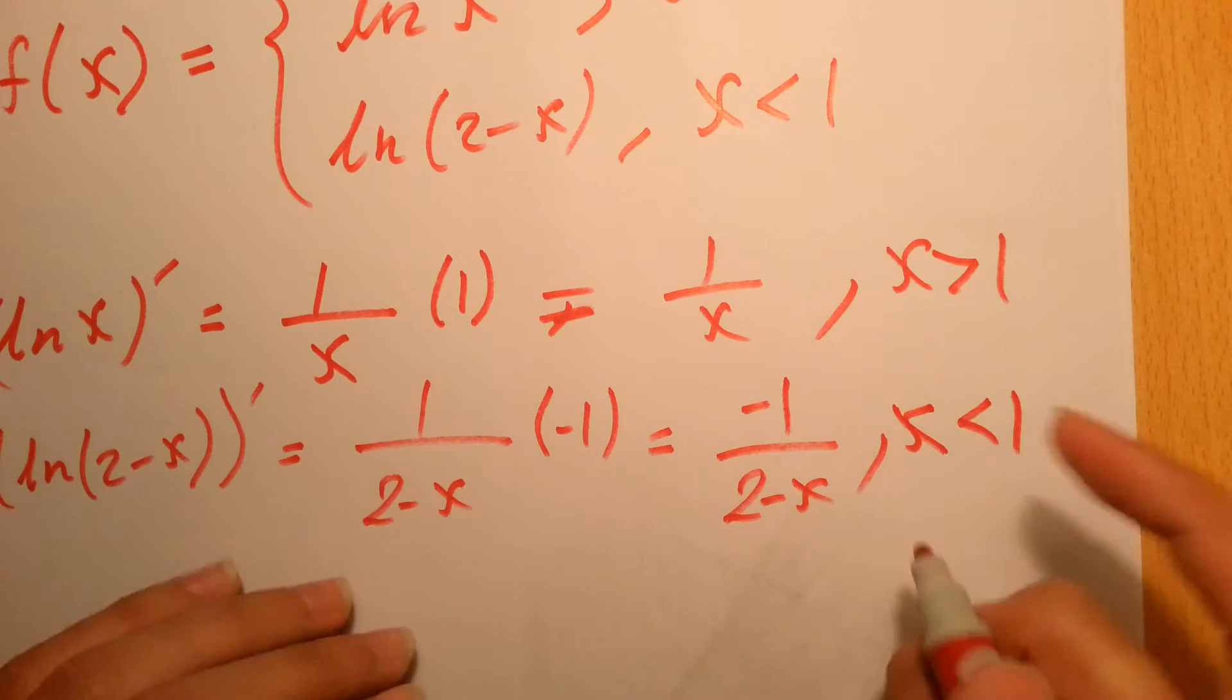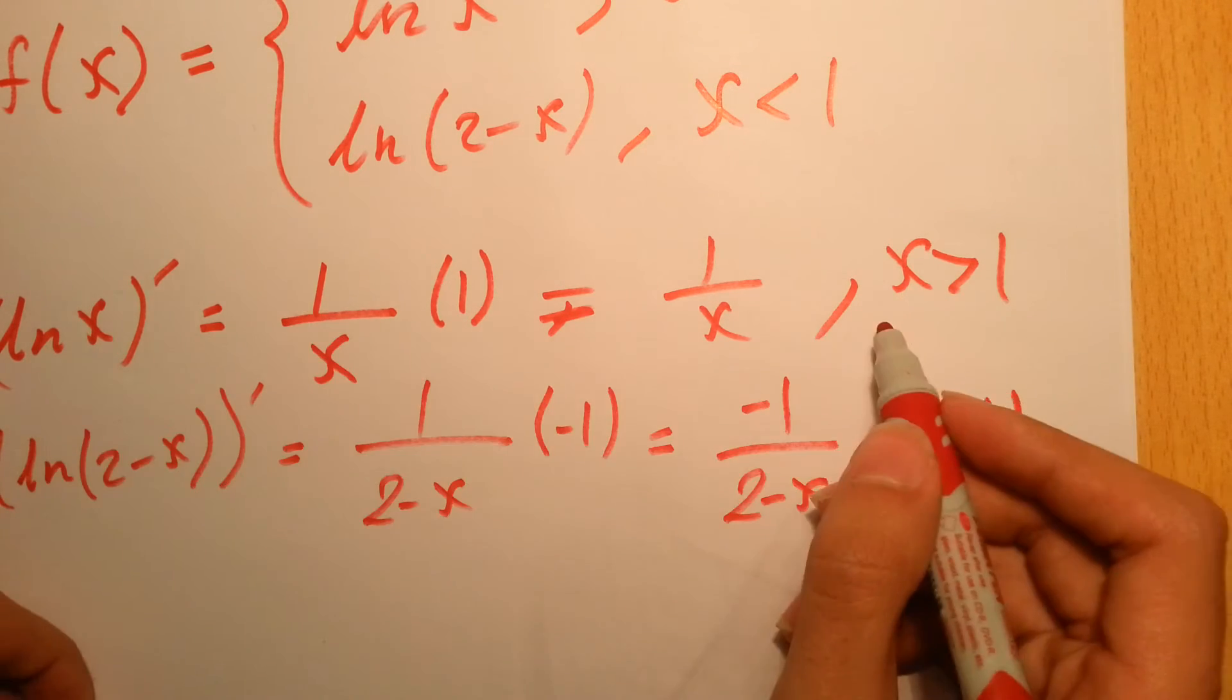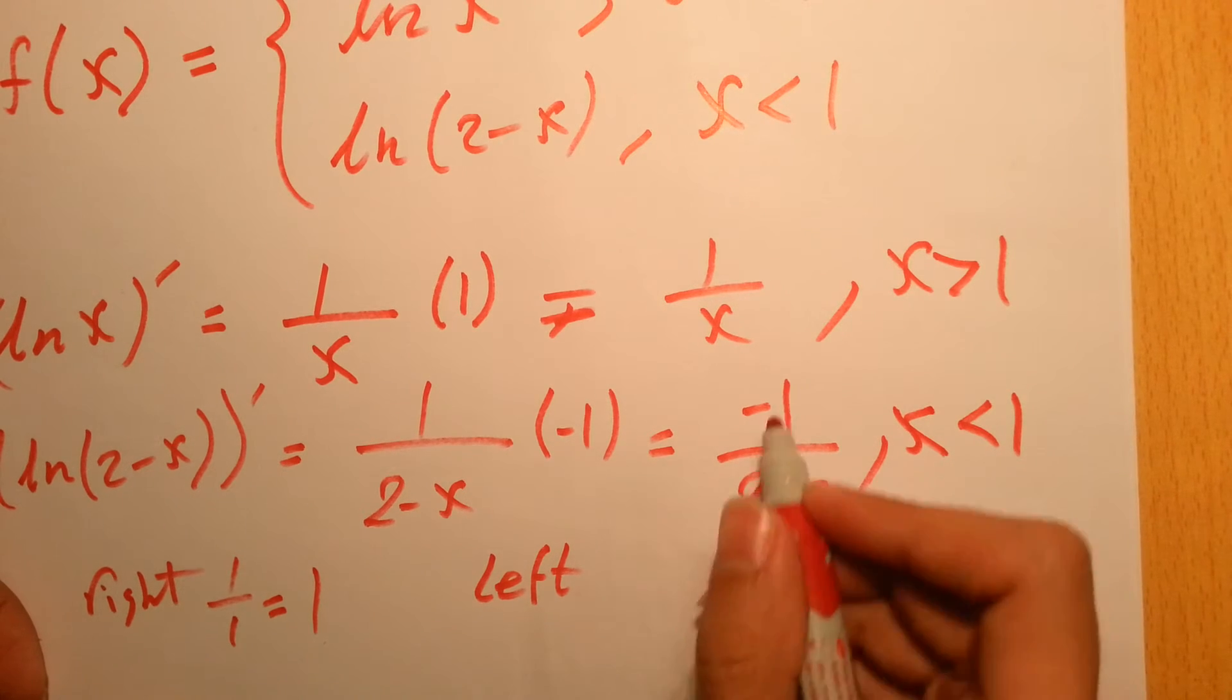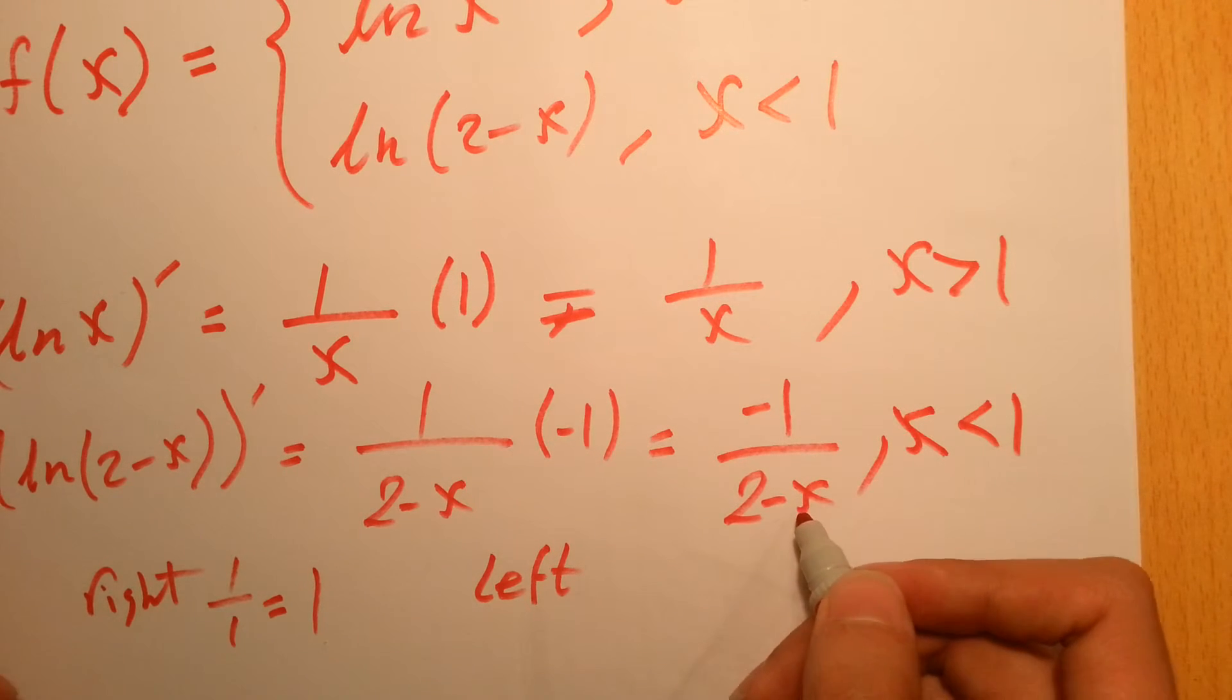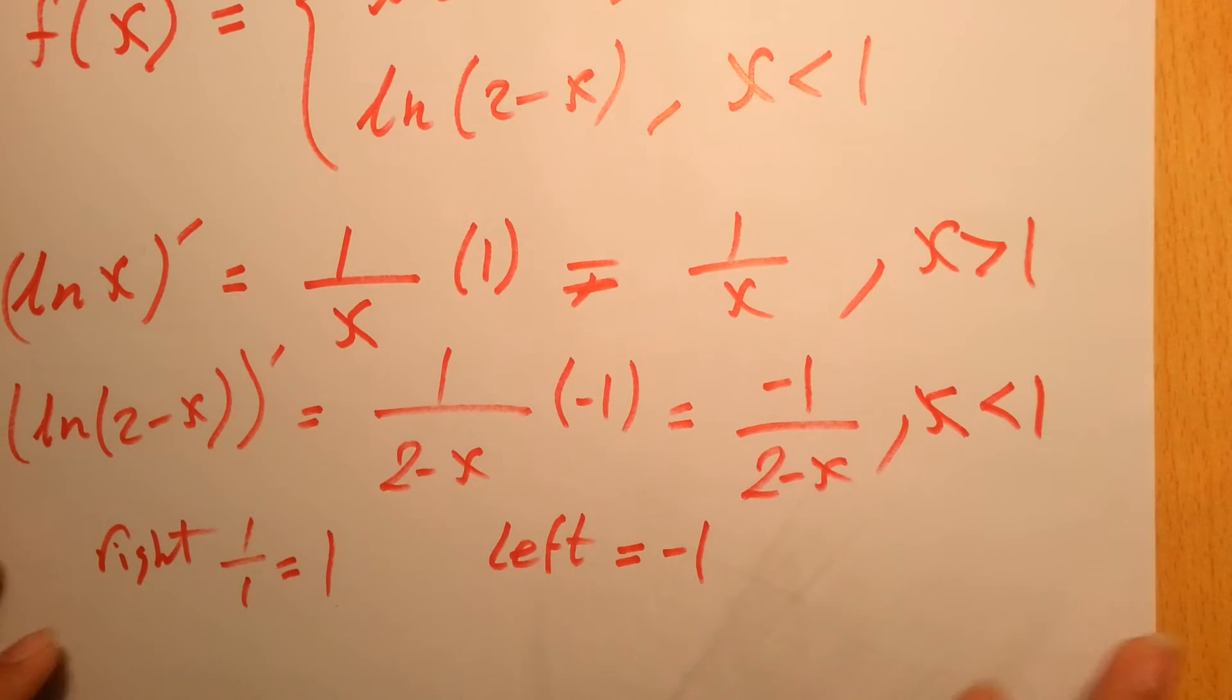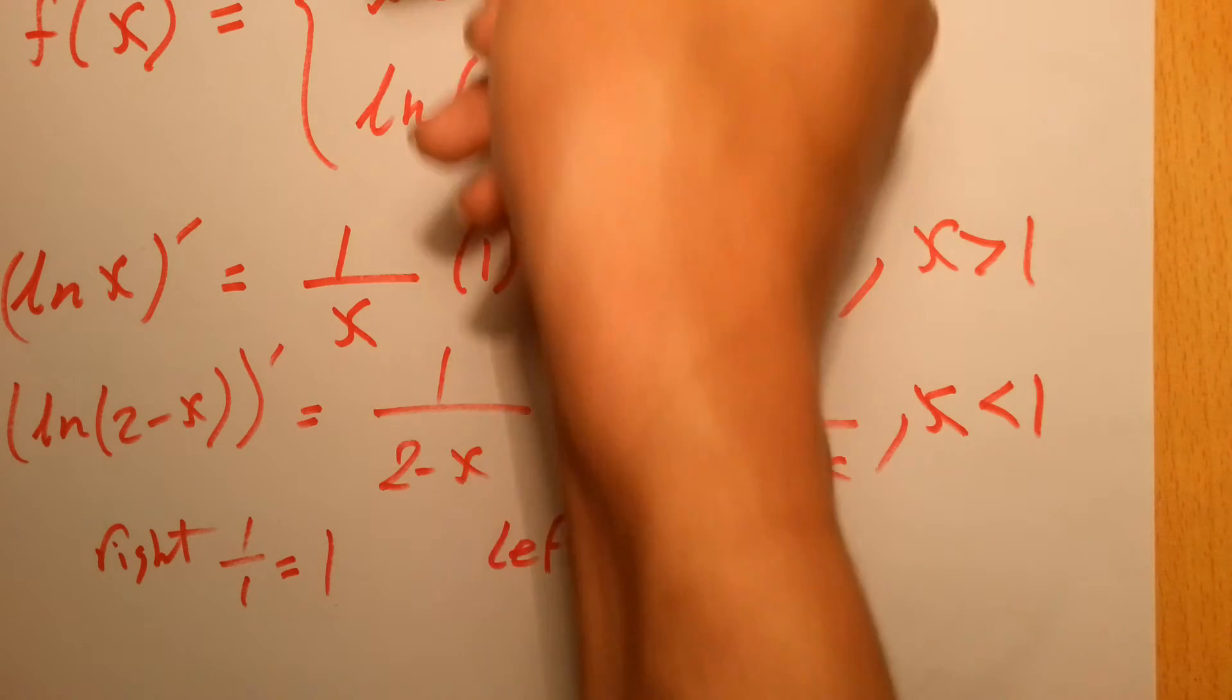Let's check the last part, which is very important, at x equals 1. The derivative from the right will equal 1 over 1, which is 1. But from the left, it's going to equal minus 1 over 2 minus 1, which is minus 1. So from right it doesn't equal the derivative from the left.